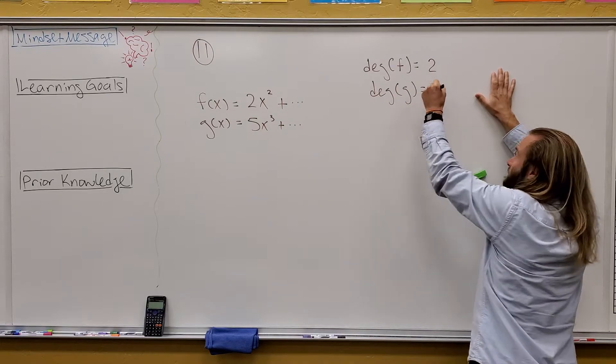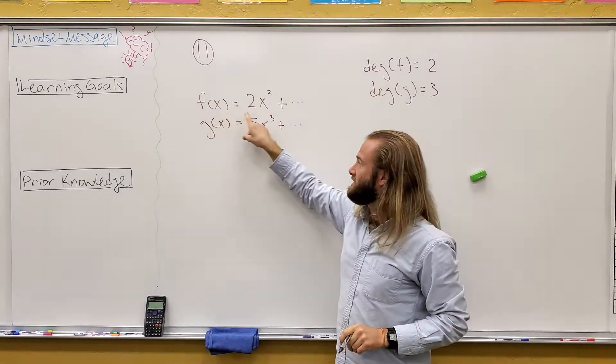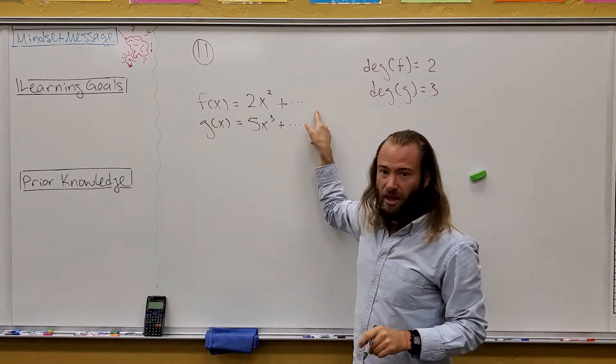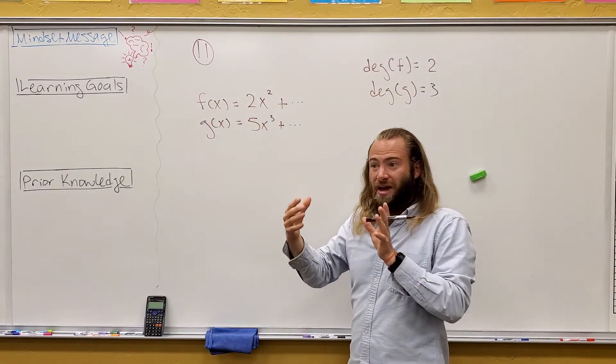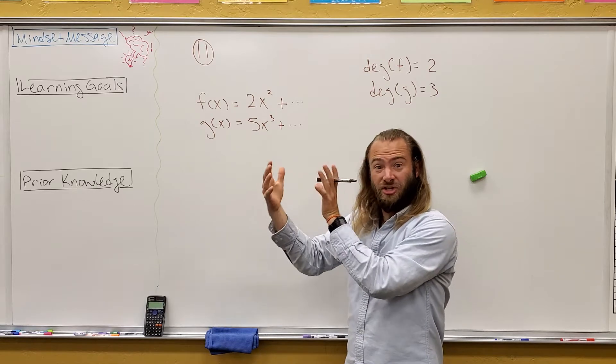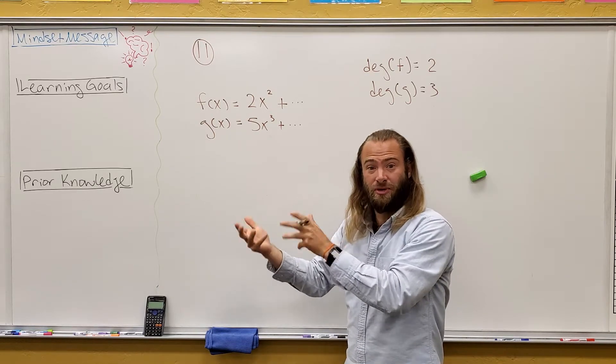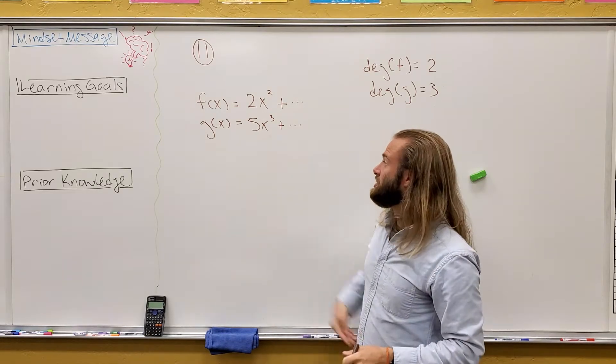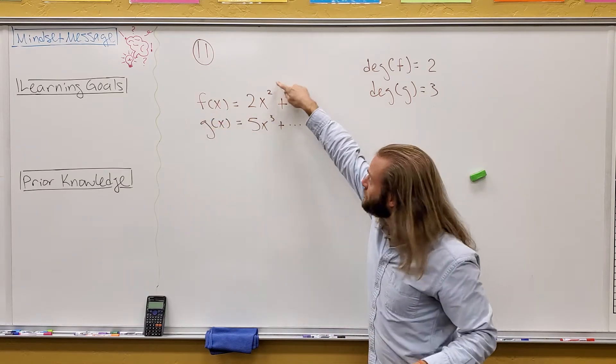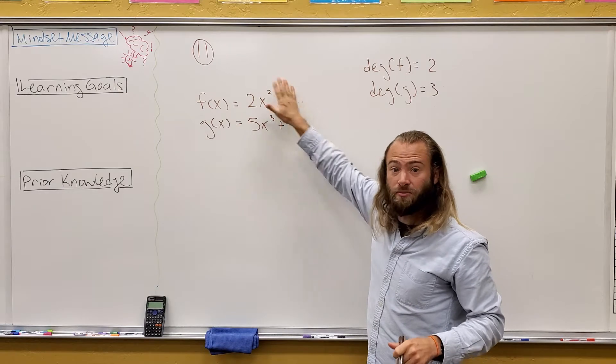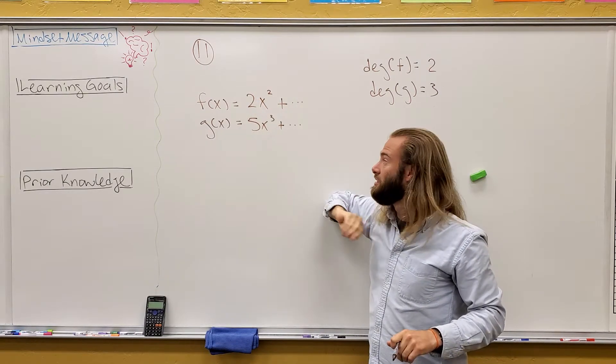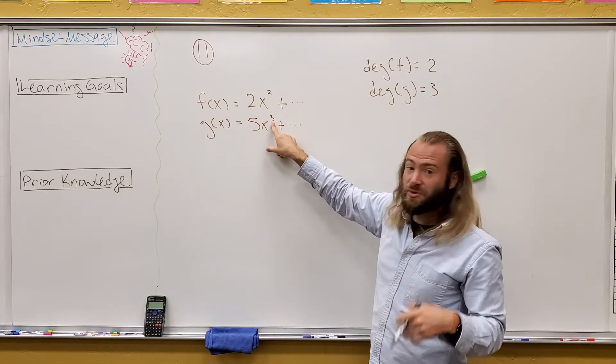This one I messed up. So if F of X is 2X squared plus blah blah blah, it doesn't really matter what else is here. Because when we're talking about degree, it only matters that we look at the leading term, the highest exponent. Remember, degree means the highest exponent. So Deg F would be 2, because this exponent is 2. We're assuming this is written in normal form, so this is the highest one, right? And Deg G is 3, because this one has degree 3.